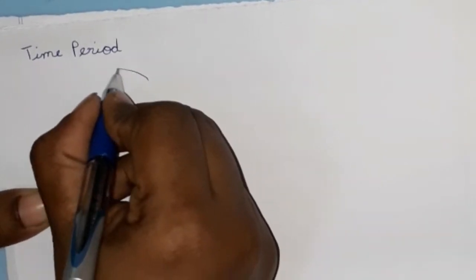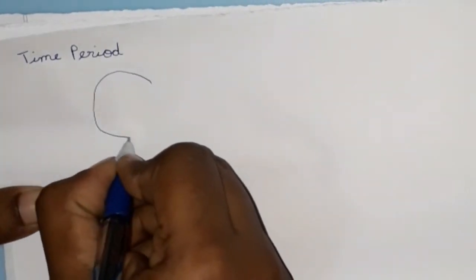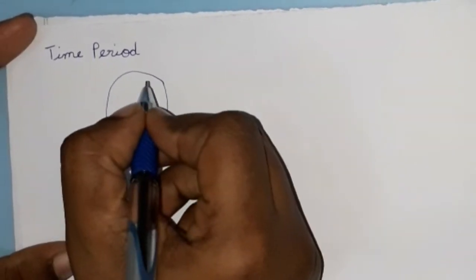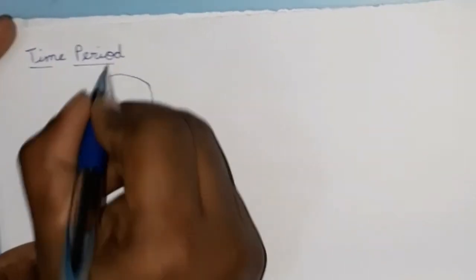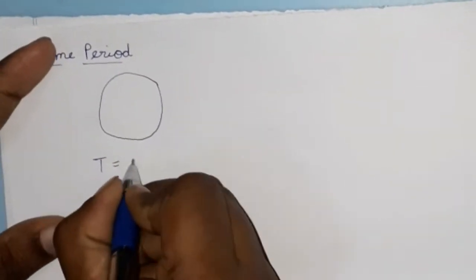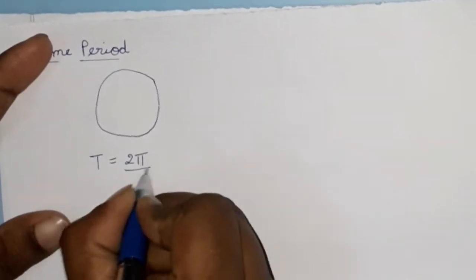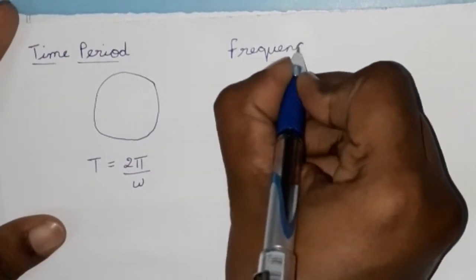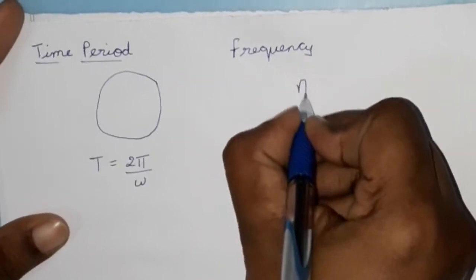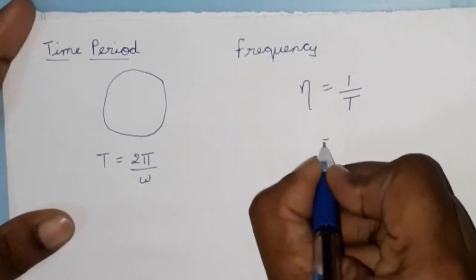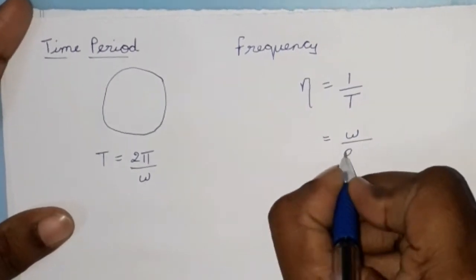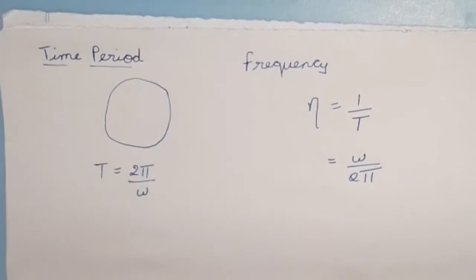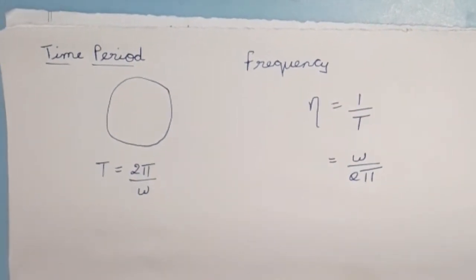The time period T equals 2 pi by omega. Frequency is the reciprocal of time period, so frequency f equals 1/T, which is nothing but omega by 2 pi.